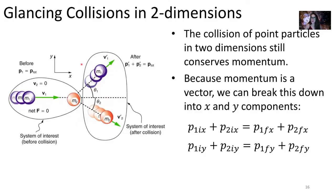Remember that momentum is a vector. So we're still going to have conservation of momentum even if the collision happens in two-dimensional space. Because momentum is a vector, we have to solve our conservation of momentum equation separately in the x dimension and separately in the y dimension — just like we handled forces separately in x and y for Newton's second law. We combine those results to get the final momentum or velocity vector.